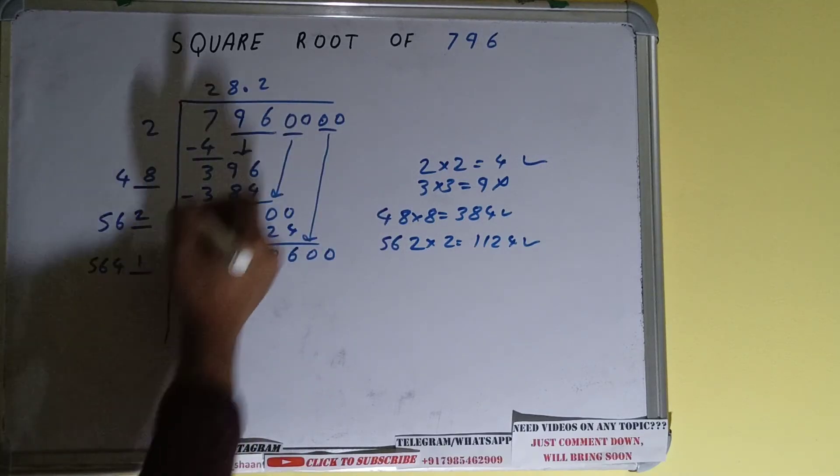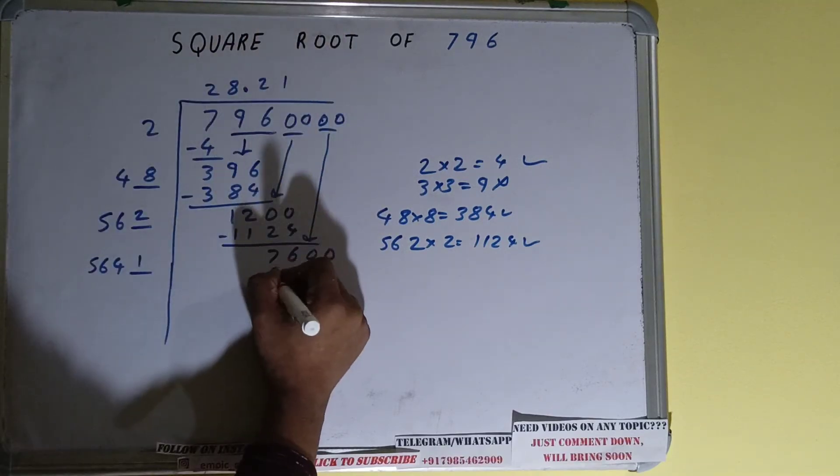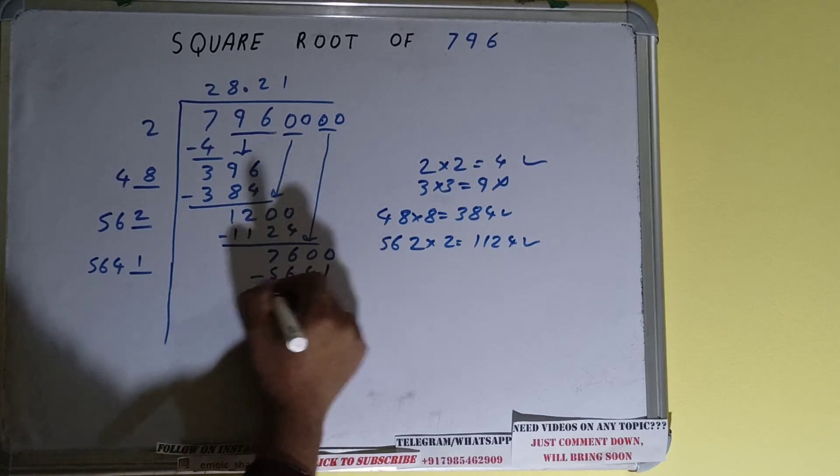So we can try 1 time. 1 here and 1 here will be 564. And 1 here will be 5641. Subtract it.